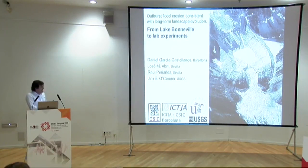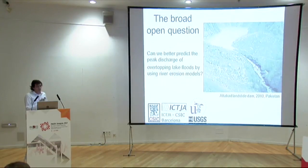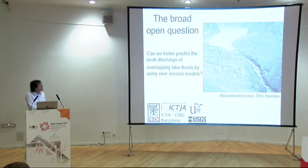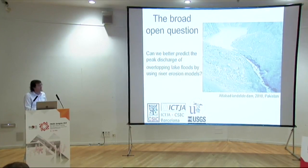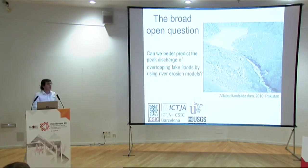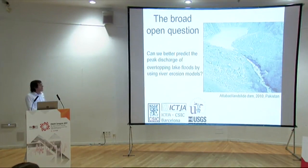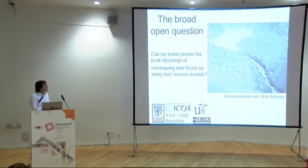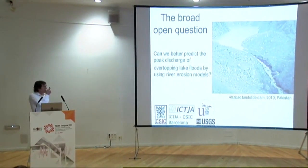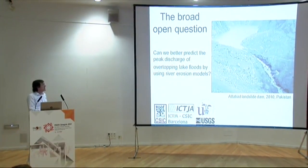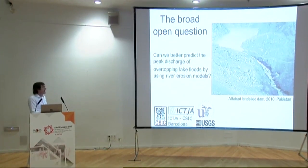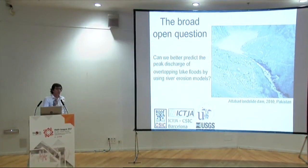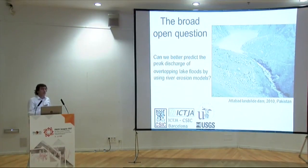The idea is to understand when does this happen, in contrast with other situations like this landslide in Pakistan — Atabad 2010 — where several thousand people had to be evacuated and nothing happened. When the lake overtopped, water started circulating but simply performed no significant incision, and this is pretty much how it looks nowadays. So we want to understand what controls whether these things happen and how we can better predict peak discharge in this setting, using numerical models — simple and complex ones.